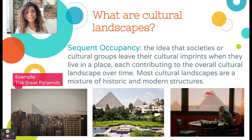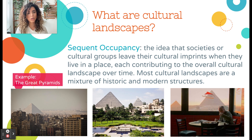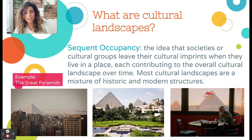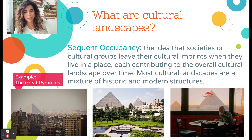Let's talk about sequent occupancy — sequent as in sequence. This is the idea that societies or cultural groups leave their cultural imprints when they live in a place, each contributing to the overall cultural landscape over time. Most cultural landscapes are a mixture of historic and modern structures, meaning that previous occupants of an area left their imprint and we can still see evidence of that today.